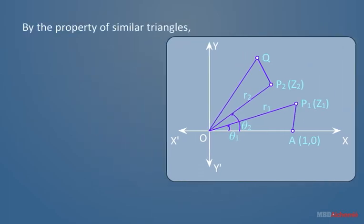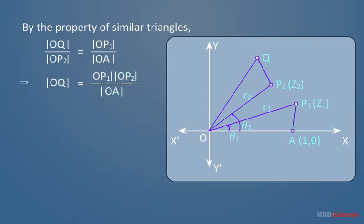By the property of similar triangles, ratio of corresponding sides should be equal. So we have OQ upon OP2 is equal to OP1 upon OA. On putting the value of OP1, OP2 and OA, we have mod of OQ is equal to R1 into R2.